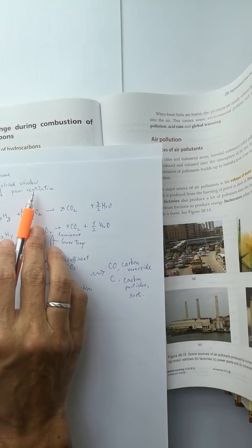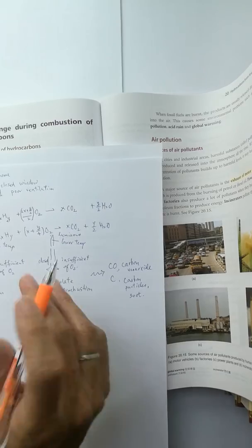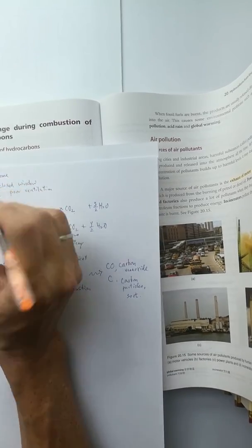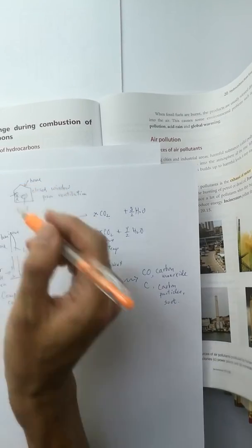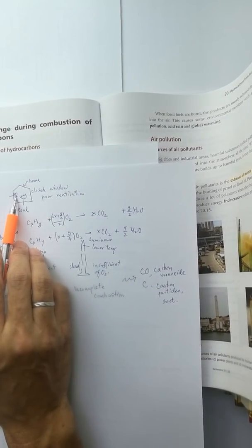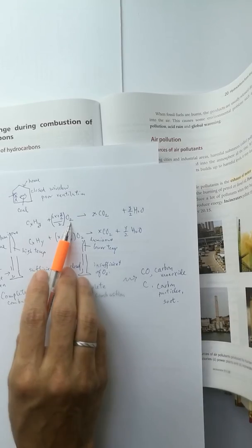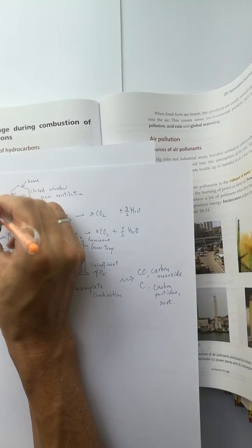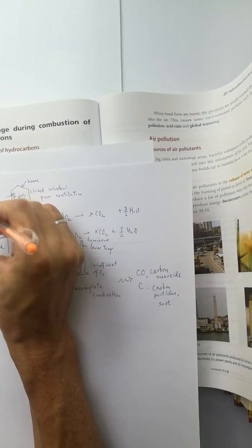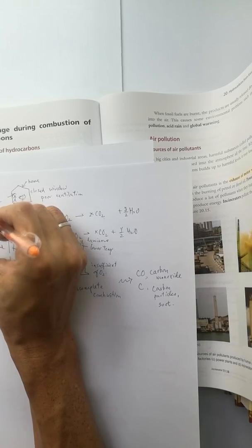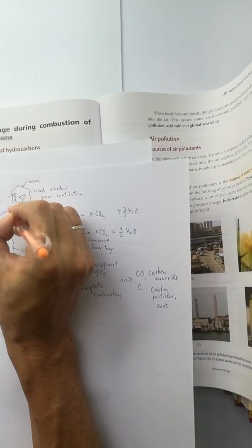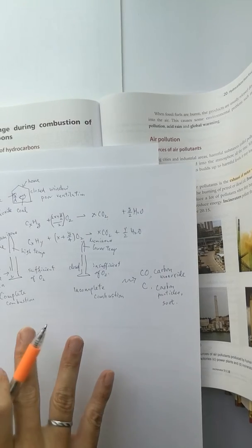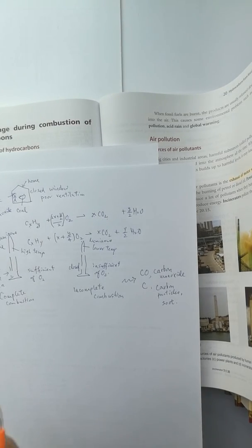When you burn coal in a home with poor ventilation, people will die. You cannot say he or she has not enough oxygen, but because of the toxic carbon monoxide. He died because of toxic carbon monoxide, not due to insufficient oxygen. He died because of toxic carbon monoxide formed by incomplete combustion.